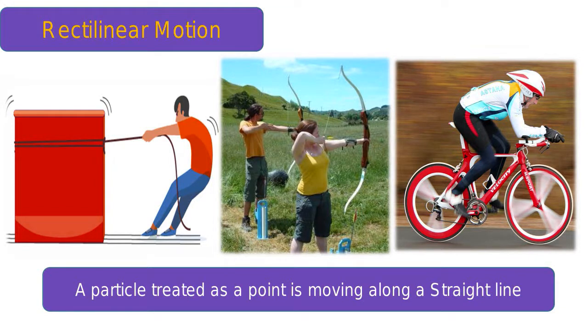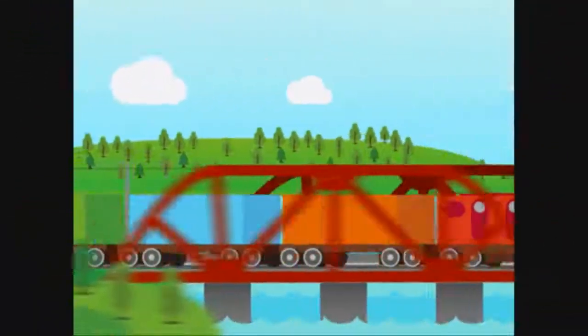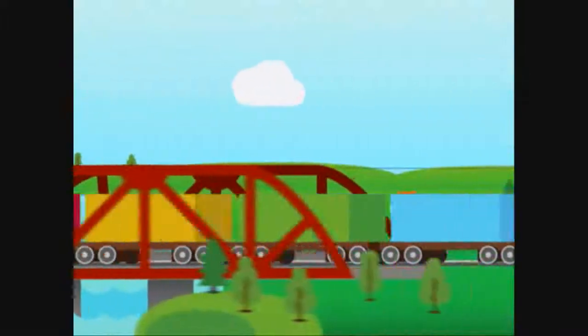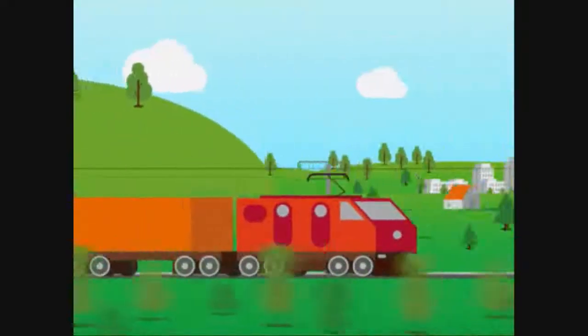Translatory motion can be rectilinear or curvilinear depending on the path of the object. A body or object showing translatory motion in a straight line is in rectilinear motion. For example, a lift moving up and down and a train moving forward on a straight track are in rectilinear motion.